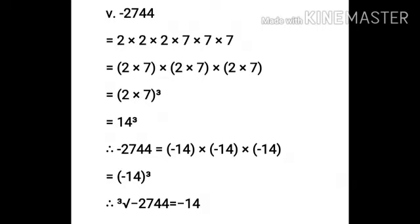In sum number 5, we have to find the cube root of minus 2744. The number 2744 is equal to 14 cube. Therefore, minus 2744 will be equal to minus 14 cube. Therefore, the cube root of minus 2744 is equal to minus 14.